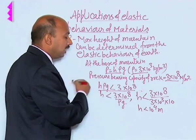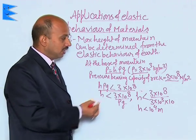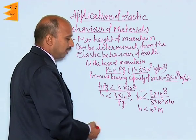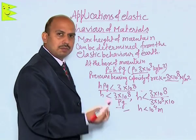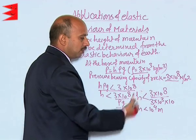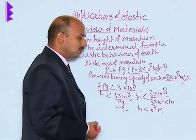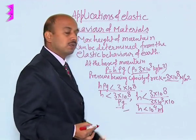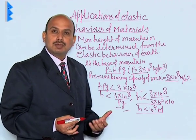We know ρ = 3 × 10³ kg/m³ and g ≈ 10 m/s². So H should be less than 3 × 10⁸ / (3 × 10³ × 10), giving H < 10⁴ meters. This is approximately the height of Mount Everest, confirming the result from the elastic behavior of Earth.